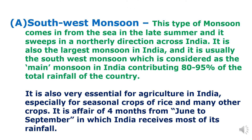Southwest monsoon starts from the sea in late summer and moves in a northerly direction across India. It is the largest monsoon in India, covering 80 to 95 percent of the total rainfall of the country. Southwest monsoon is very essential for agriculture in India, especially for seasonal crops of rice and many other crops. It continues for four months from June to September, during which India receives most of its rainfall.